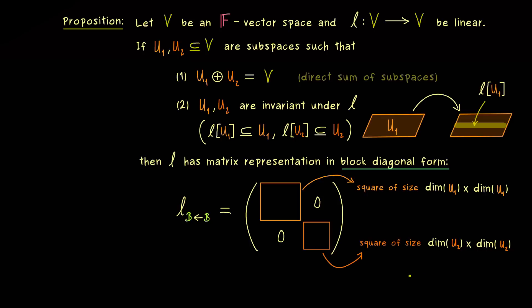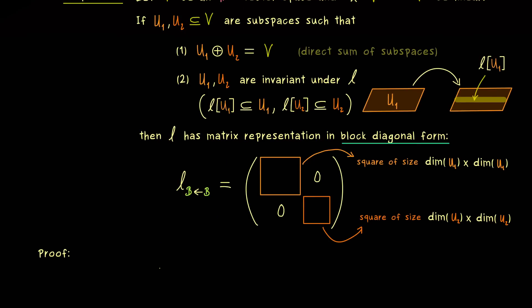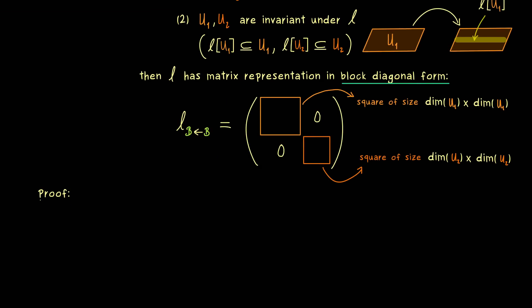So this is the whole claim. If we have these assumptions, then we always find a basis of V such that we have this nice matrix representation. Hence in the proof we just have to find such a nice basis B.